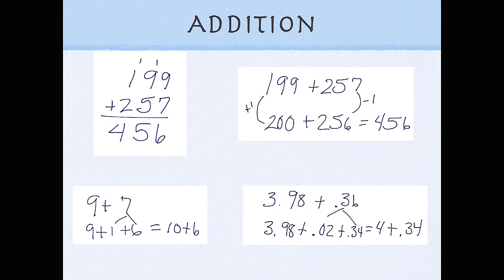So as kids progress through school, it then helps them when they have to solve problems like this. So they can take the two hundredths and move it over with the three and 98 hundredths to create four, and then they've got the 34 hundredths left.